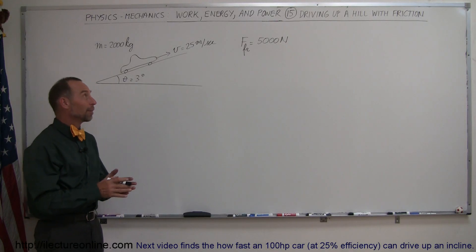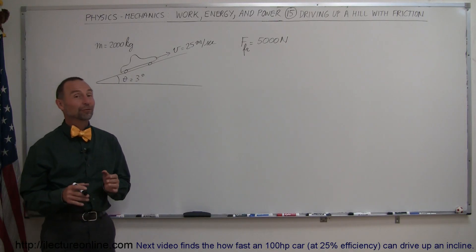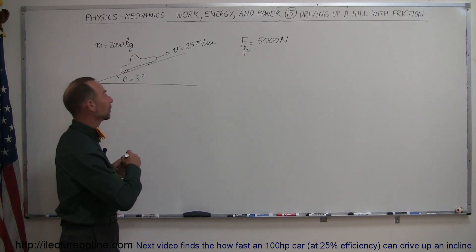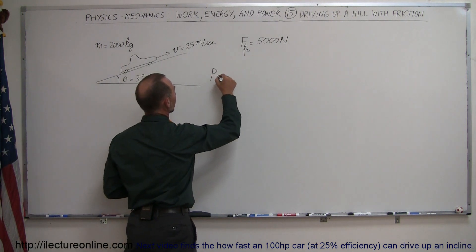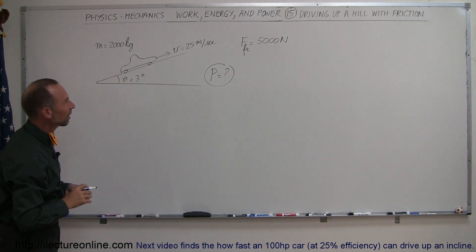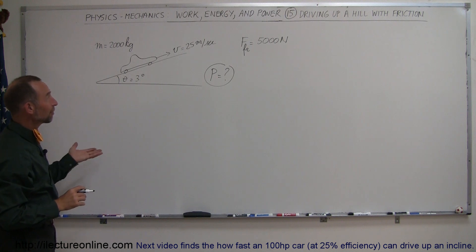In this example, we're going to drive up a hill, but we're not going to ignore friction. We now are going to account for friction. So now how much power is required to drive up this hill? It's a three-degree hill, about a five and a half percent hill at 25 miles per hour.